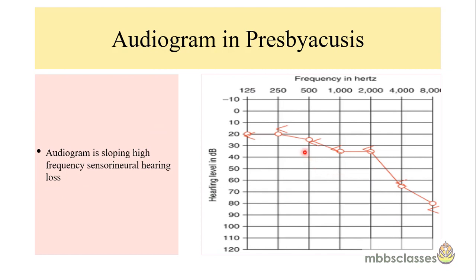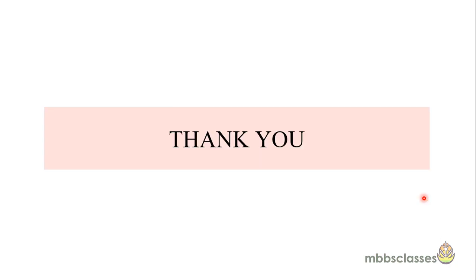This is an audiogram of presbycusis, or age-related sensorineural hearing loss. Presbycusis is still the most common cause of hearing loss. The audiogram in presbycusis is typically a sloping high-frequency sensorineural hearing loss. The bone threshold is more than 20 dB and the air-bone gap is less than 15 dB, confirming sensorineural hearing loss. It typically involves higher frequencies after 2k Hz, with a sudden dip at 4k and 8k. This falling pattern of sensorineural hearing loss is suggestive of presbycusis. Thank you for watching.